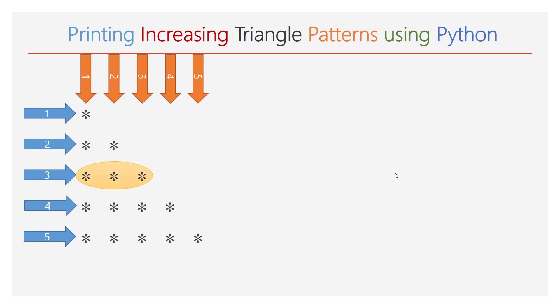Similarly, during the third iteration of the outer for loop, the inner for loop should be iterated three times. Hence, there will be three stars in the output. And so on. If you look at the last line, during the fifth iteration of the outer for loop, the inner for loop should be iterated five times. Hence, there will be five stars in the output.